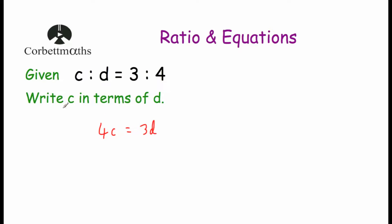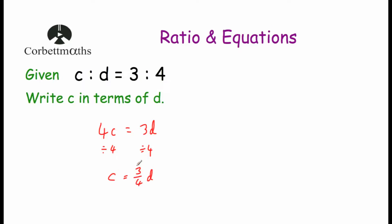We've been asked to write c in terms of d, so we want c as the subject. We don't want the 4, so divide both sides by 4. That gives c equals 3d over 4, or equivalently c equals three-quarters of d. And that's c in terms of d.